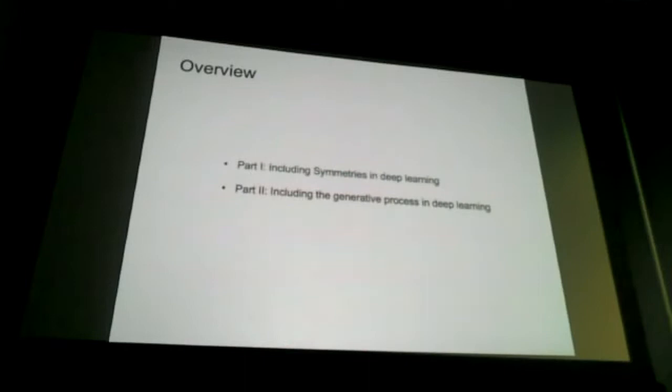This will have two main parts. One is symmetry — if we know about symmetries in the world, can we include those in our neural nets? The second is about the generative process — if you know how data got generated, can you embed that knowledge back into your neural nets?